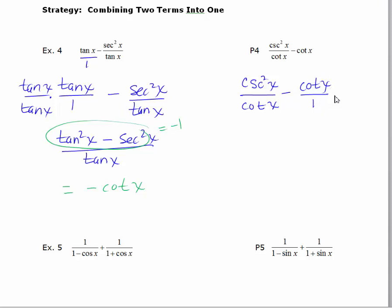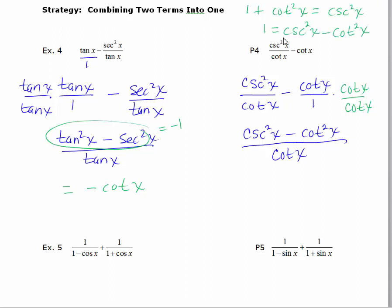We're going to multiply by the missing factor to get the LCD of cotangent. The numerator will be cosecant squared x minus cotangent squared x. I'll need to look for a Pythagorean identity that might help me make a substitution here. I know that 1 plus cotangent squared x equals cosecant squared x. So this one is just a one step if I subtract cotangent squared x from each side. I'll get 1 equals cosecant squared x minus cotangent squared x.